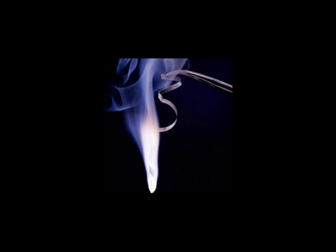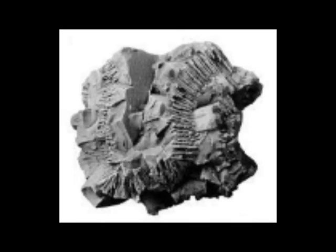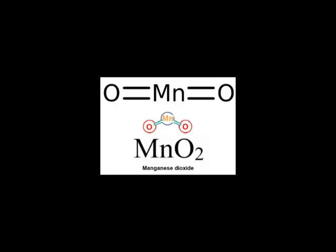Manganese is most commonly found in oxide minerals such as pyrolusite. Pyrolusite is mainly manganese dioxide or MnO2. This chemical includes a manganese atom combined with two oxygen atoms, the oxygen being the reason for it being an oxide metal.